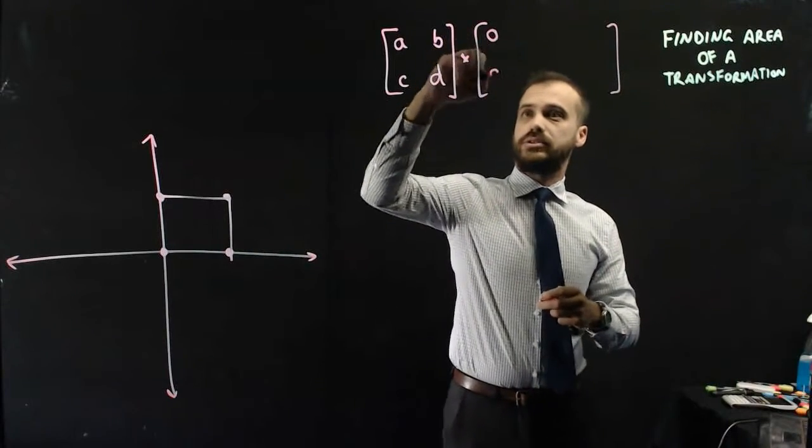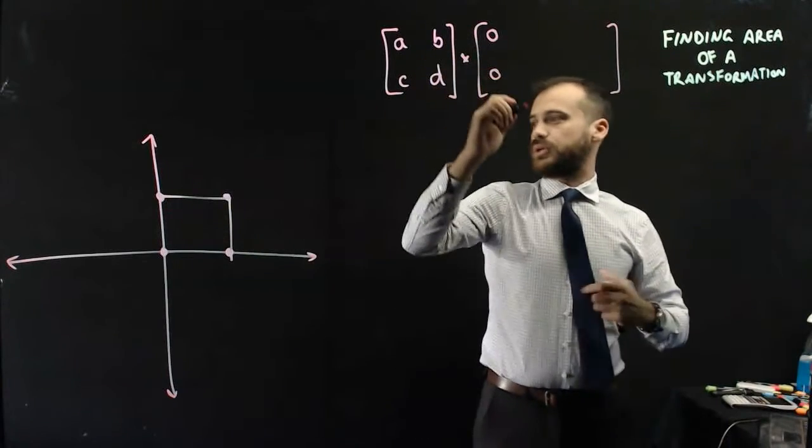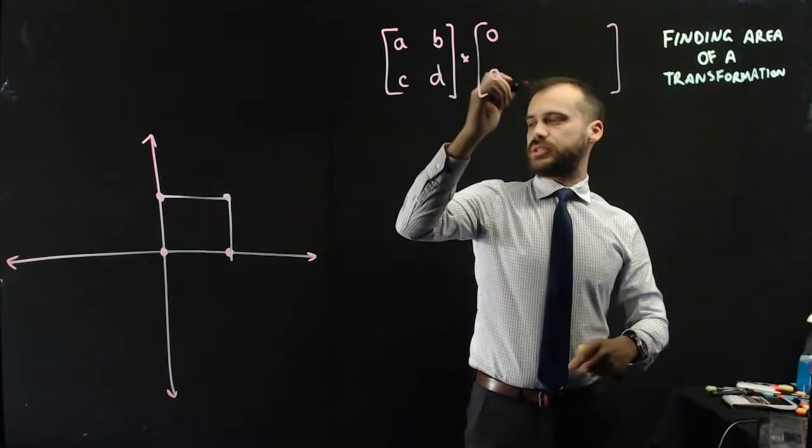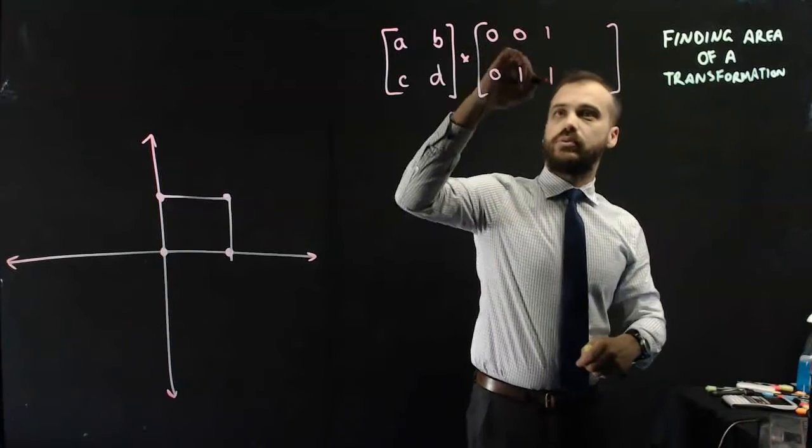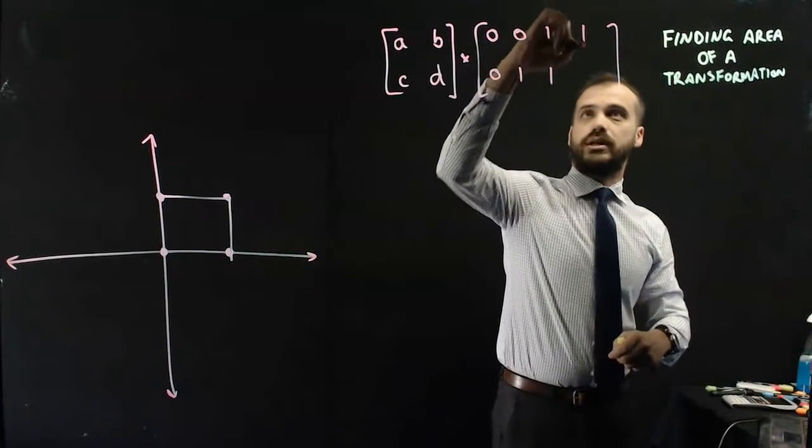Now I'm going to multiply the whole unit square by that. So I'm going to use that point 0, 0. I'm going to use that point, what is that? That's 0, 1. I'm going to use that point which is 1, 1. And I'm going to use that point which is 1, 0.